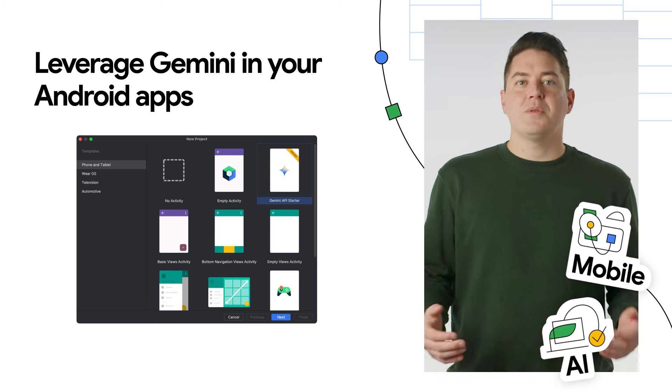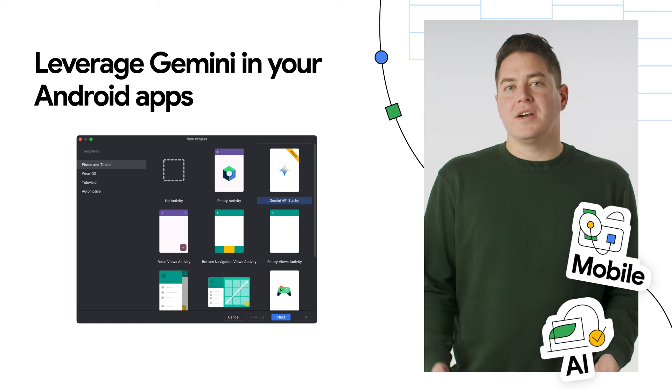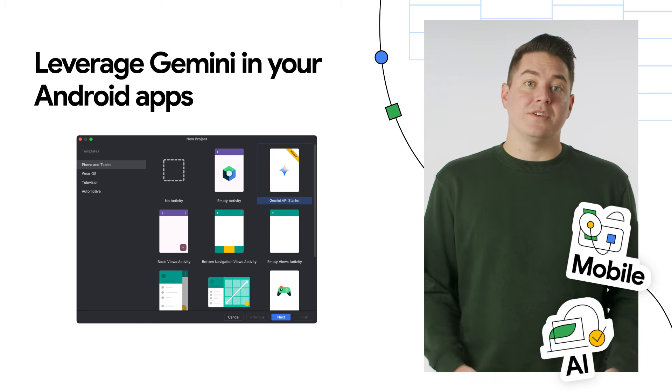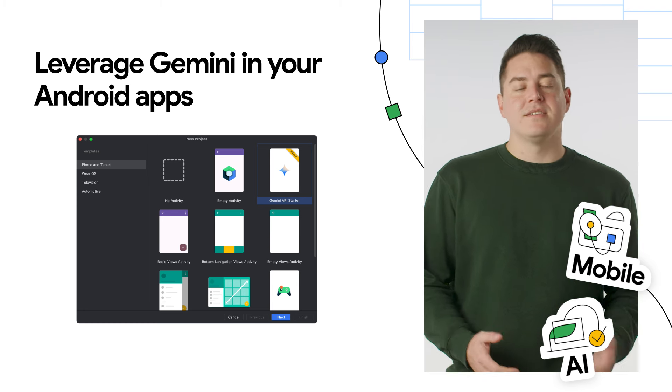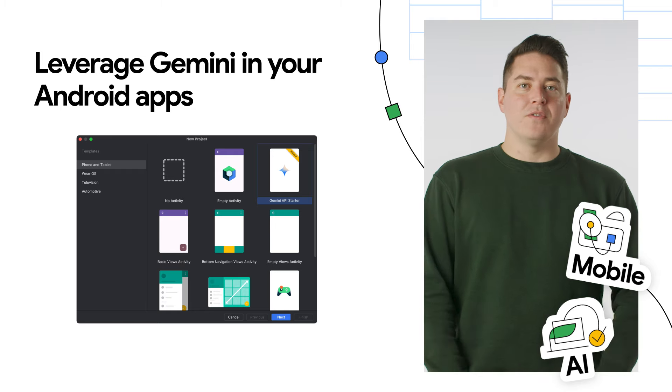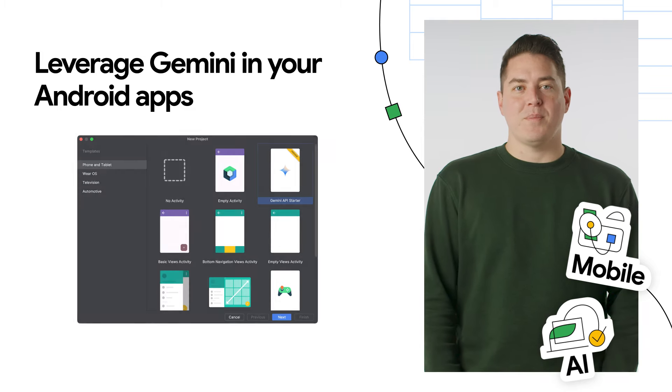To get started with prompts and testing various interactions, you can use the new Google AI Studio to generate API keys, code snippets, and easily go from idea to app.